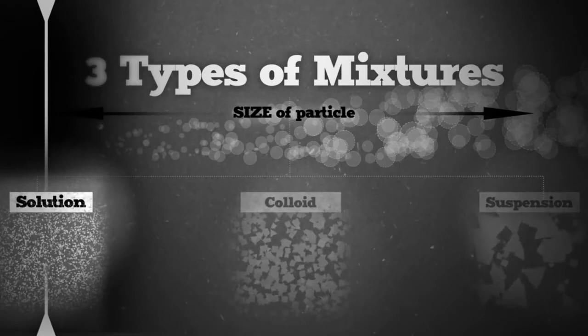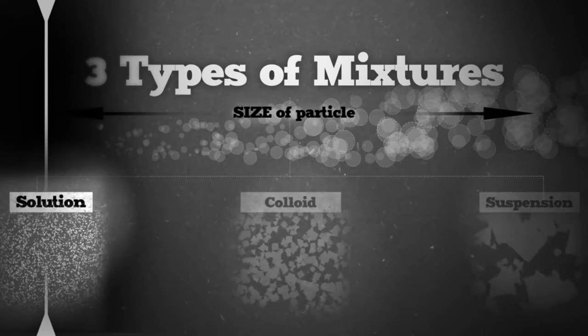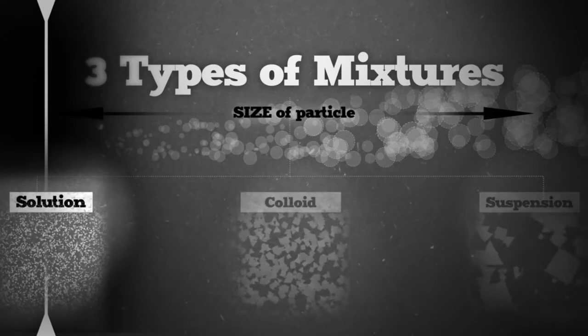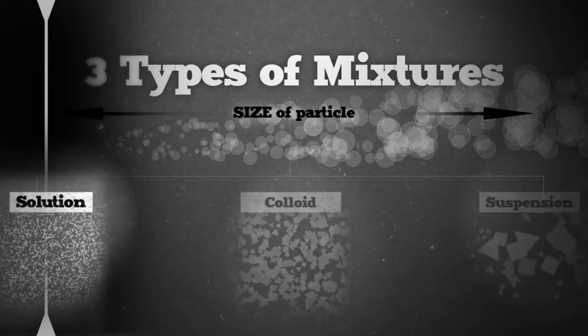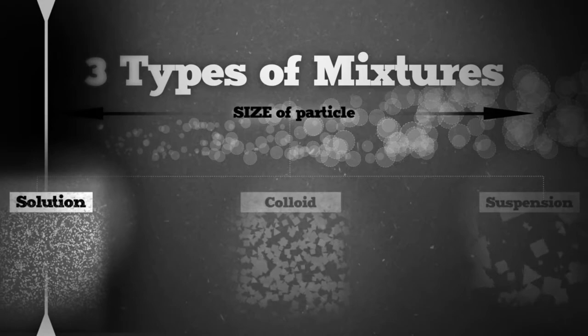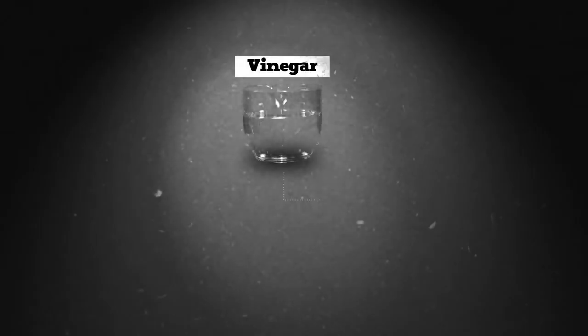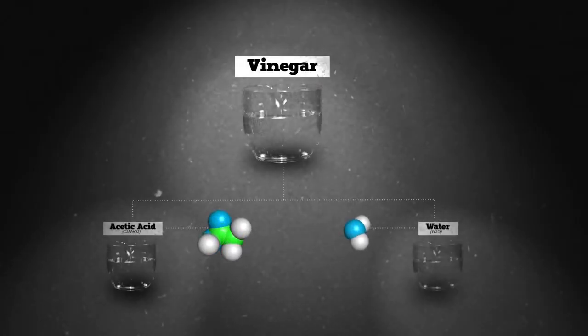Now on the other end of the spectrum is a solution. The particles in this mixture are so small, they are the actual molecules. A solution is sort of like a suspension of molecules, where one type of molecule is blended or dissolved with another. Vinegar is an example of a solution, where the molecules of acetic acid are blended with molecules of water.